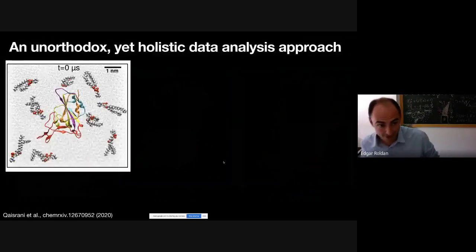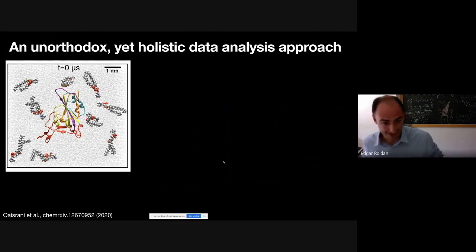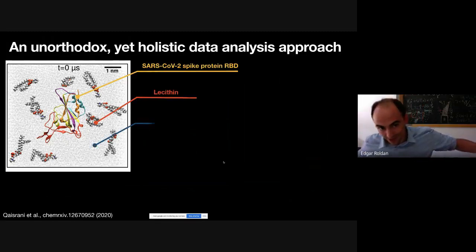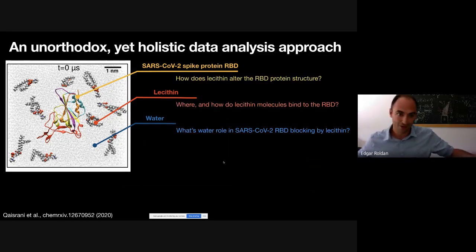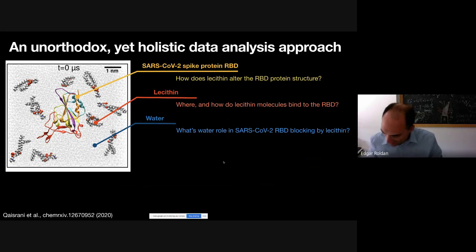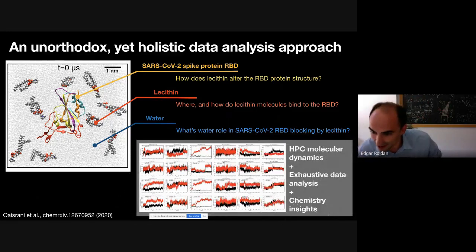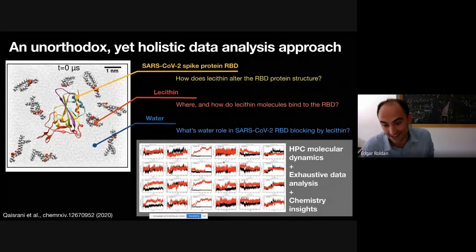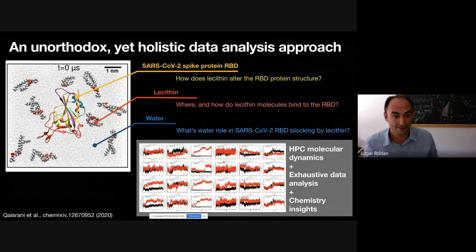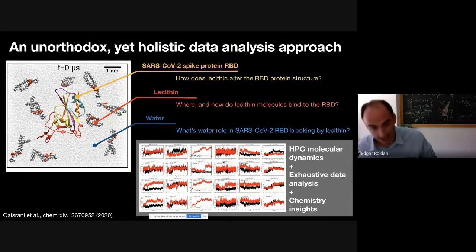We were very excited to see this. We did simulations for different concentrations — different numbers of lecithin molecules — and for different initial conditions, building a lot of data. We then analyzed this data with an unorthodox yet holistic approach, looking at three phases: first, what happens to the protein when lecithin arrives; second, where do lecithin molecules bind in the RBD; and third, what is the role of water. I will talk mainly about the second and third parts, using a combination of HPC molecular dynamics, exhaustive data analysis, and insights from chemistry.